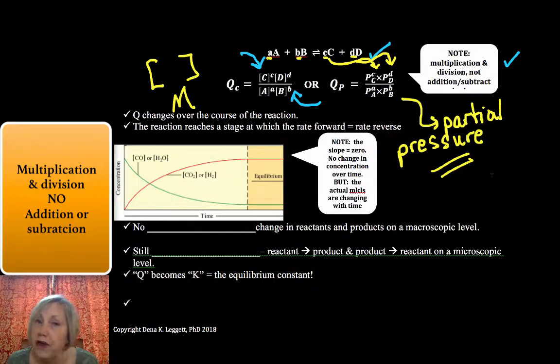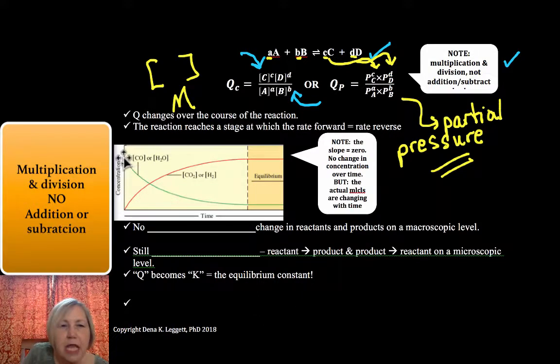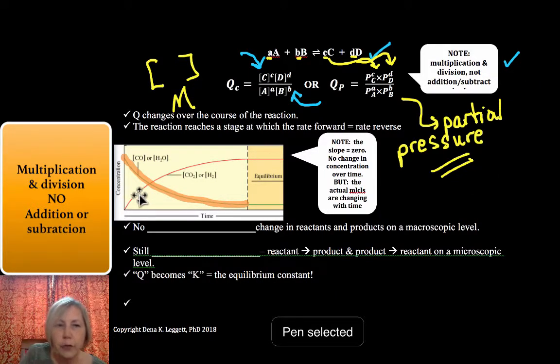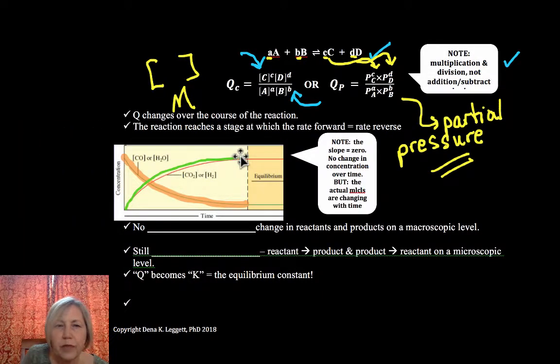So Q, we'll find this reaction quotient is going to change over the course of a reaction. So if we started with reactants, all reactants and no products over time, we're going to lose reactant. And as reactant is colliding and forming product, we're going to see an increase in our product molarity. And very quickly, all this place, you notice that that ratio is changing over time.